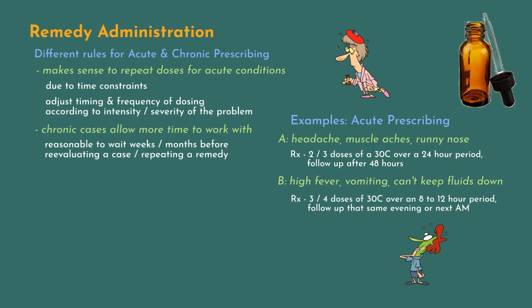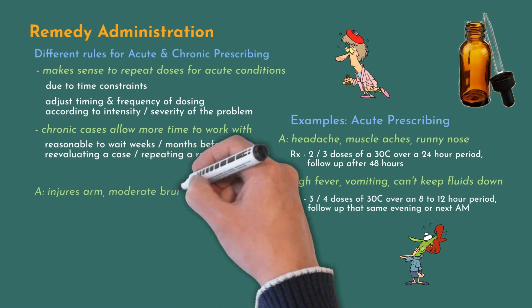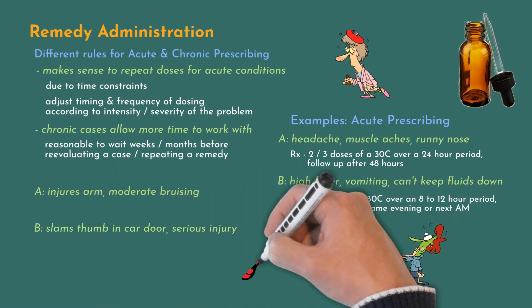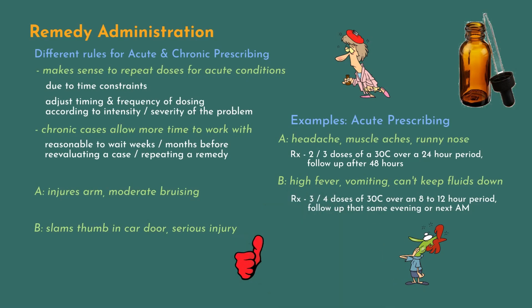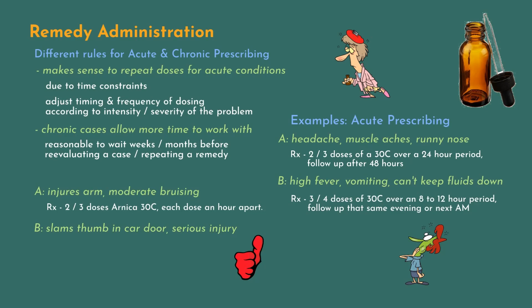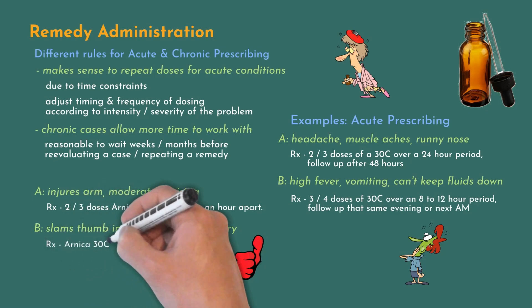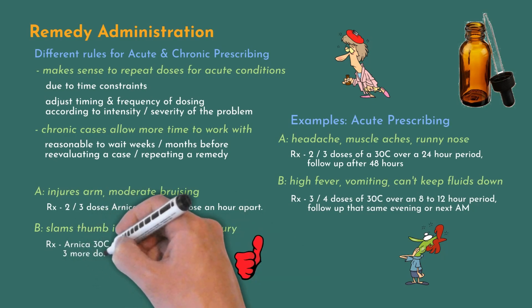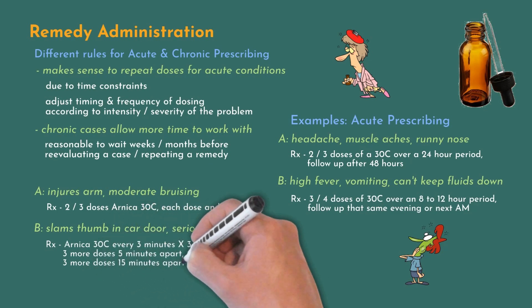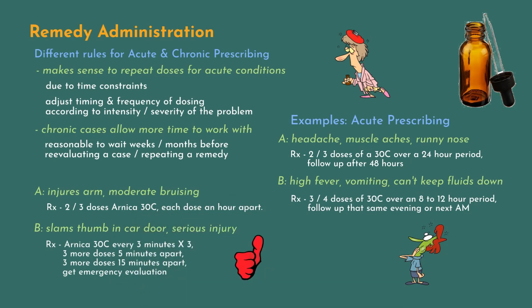Let's try another example. Person A falls and lands on his arm, resulting in moderate bruising. Person B slams his thumb in a car door, resulting in potentially serious injury. In the first case, I might recommend 2 or 3 doses of Arnica 30C, with each dose taken an hour apart. The second case requires much more immediate action. I would instruct the patient to take a dose of Arnica 30C every 3 minutes for 3 doses, then 3 more doses 5 minutes apart, then 3 more doses 15 minutes apart. All of this should be done while traveling to and waiting to be seen at the nearest emergency facility. Here you see how we must tailor the dosing according to the urgency of the problem.